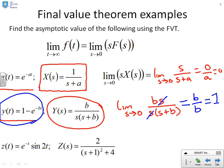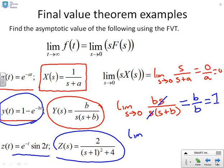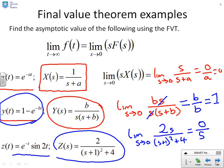A final example: z(t) = e to the minus t times sine 2t, with Z(s) = 2 over ((s+1)² + 4). Applying the Final Value Theorem: the limit as s goes to 0 of 2s over ((s+1)² + 4) gives 0 over 5, which is 0. And looking at the original signal, yes, the final value is 0.